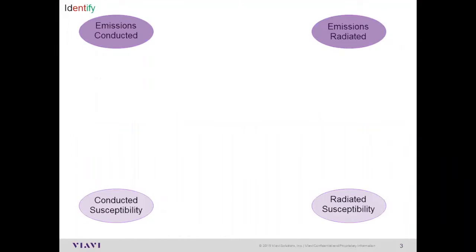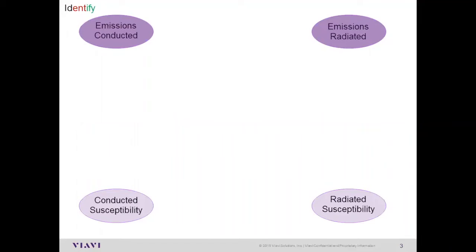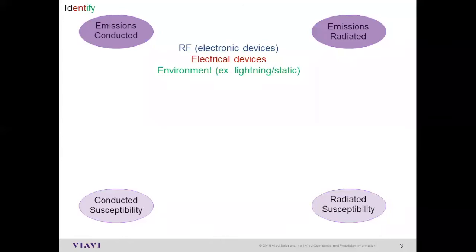To first talk about interference, we really need to talk about the four sources as well as susceptibility. You have emissions that are conducted and radiated, plus conducted and radiated susceptibility—those are the four basic components considered part of interference. In the world of RF, we intentionally radiate and receive signals across open air, so there's a wide variety of potential sources of interference. Unwanted emissions can originate from electronic devices producing RF—laptops, power supplies, projectors, TVs—or noisy electrical devices like power supplies and grounds, or environments like lightning and static.